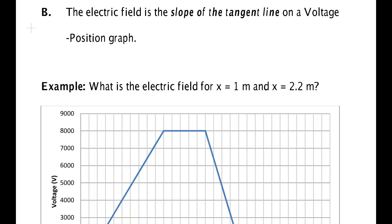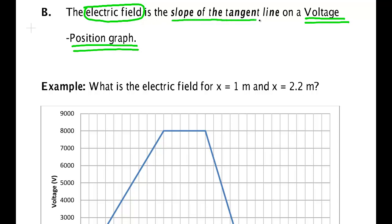Now let's turn the problem around. Instead of knowing the electric field, suppose you know the voltage or electrical potential and you plot that — a voltage-position graph — and you want to find the electric field. For those who have had calculus, finding areas under a curve is integration, and the inverse of integration is differentiation, which gives the slope of the tangent line. For those not in calculus, just remember: the electric field is the slope of the tangent line on a voltage-position graph.